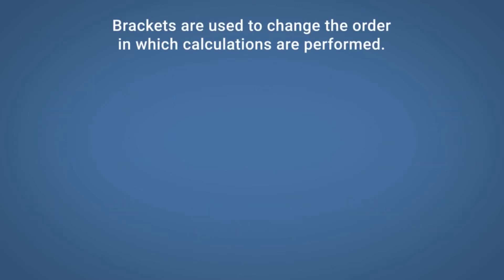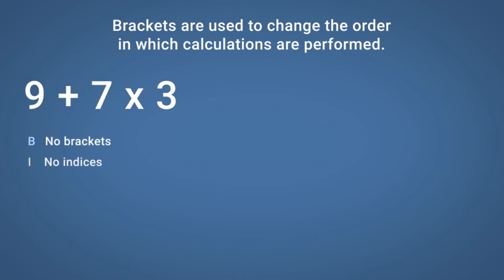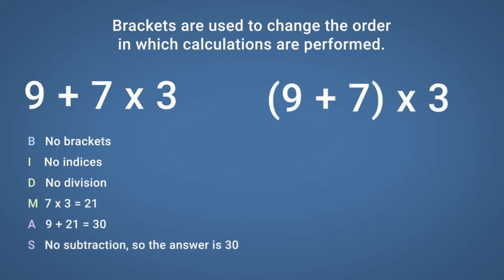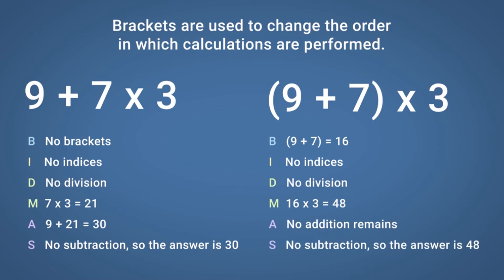Brackets are used to change the order in which calculations are performed. For example, 9 add 7 multiplied by 3 with no brackets is calculated in the following way, giving a final answer of 30. However, if brackets are placed around 9 add 7, then according to the BIDMAS rule, the order of calculations changes and should be carried out in the following way, giving a final answer of 48.